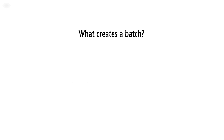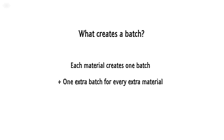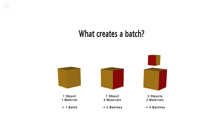In order to decrease the number of batches, we need to understand what creates them. The batches are mainly split by materials — each material creates one batch. But if a single mesh has several materials, there will be one batch for every material. For example, the object to the far left has only one batch. The object in the middle has two materials and thus two batches. The object on the far right has two meshes and two materials, which equals four batches.